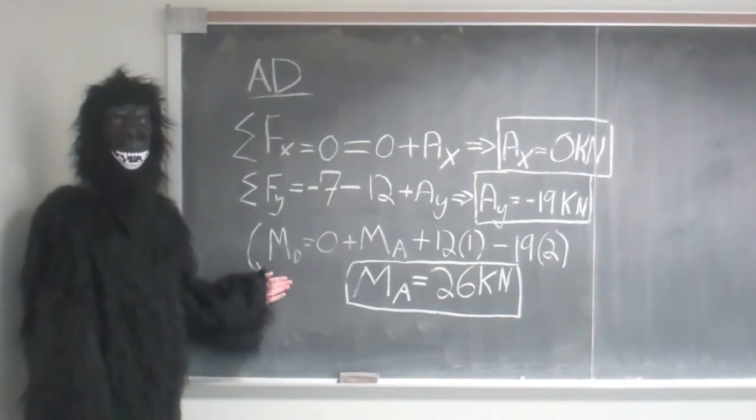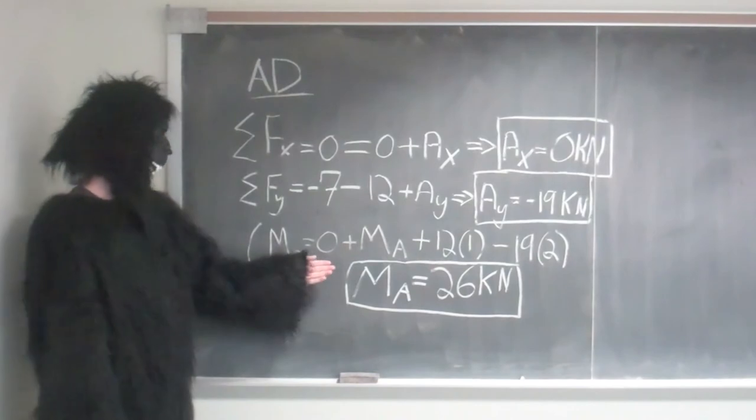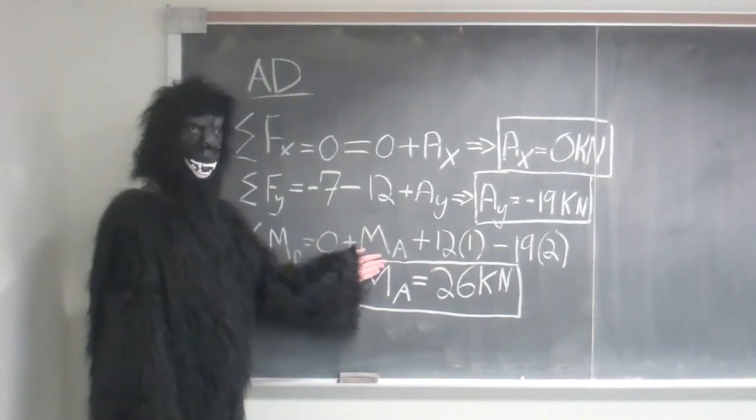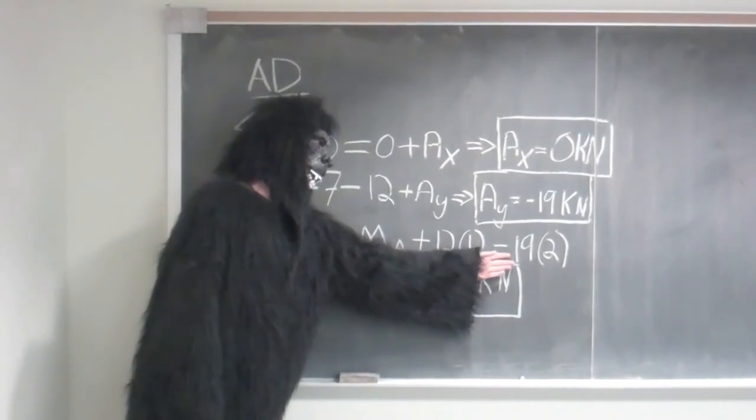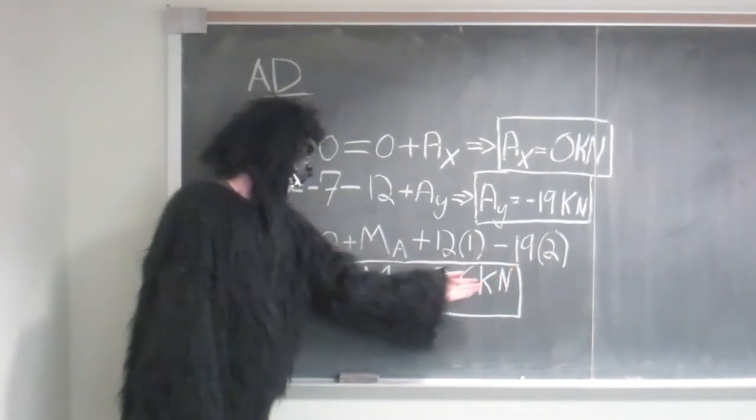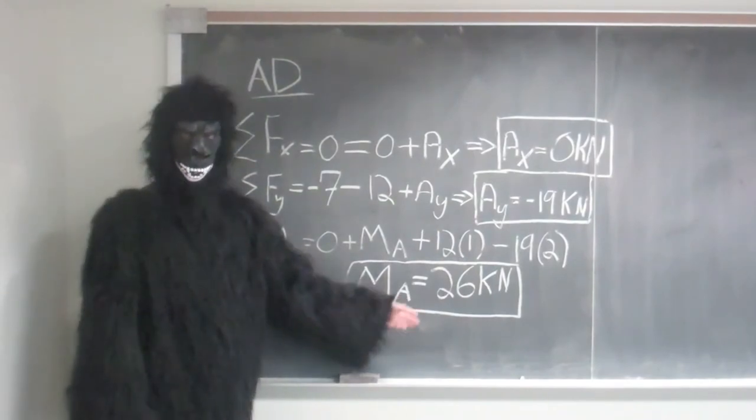With our moment, we took the moment at point D, canceling out DX and DY, which gave us 0 plus our moment at point A, plus the moment of the distributed load, minus the moment of AY, giving us that M of A is equal to 26 kN.